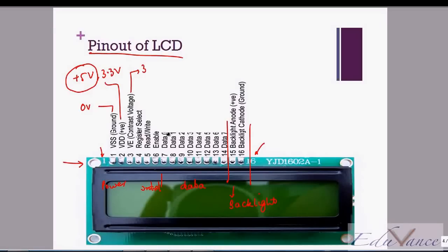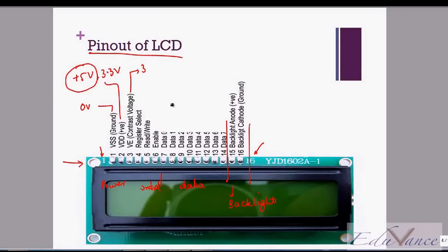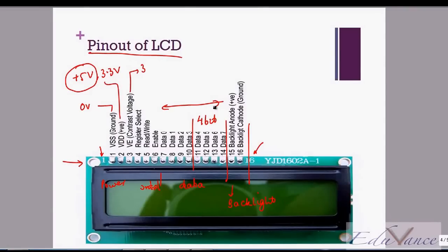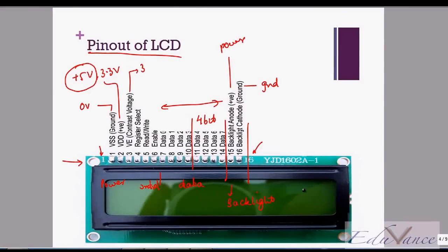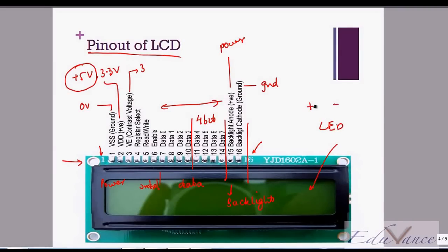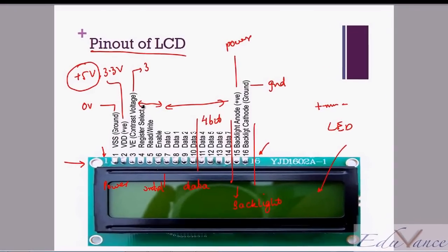Pins 4, 5, and 6 are control pins, which I will explain during this lecture. Pins 7 through 14 are your data pins. In the next slide I will explain that you can use your LCD either in a 4-bit mode, using just four bits of data, or in an 8-bit mode. Pins 15 and 16 are backlight pins — positive connects to power supply and negative to ground, which lights up the LED at the back. It needs a positive and negative supply with a resistor on either side.